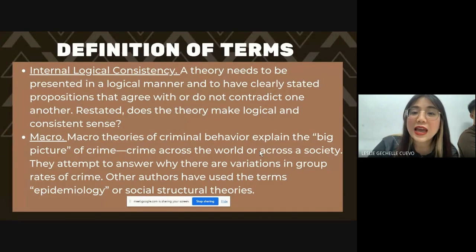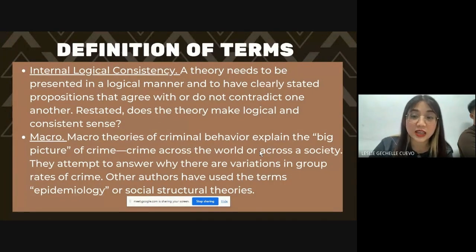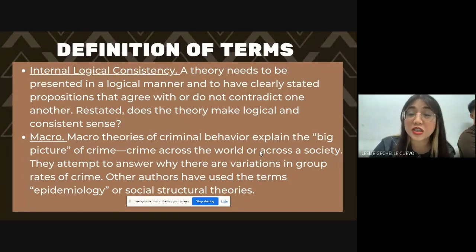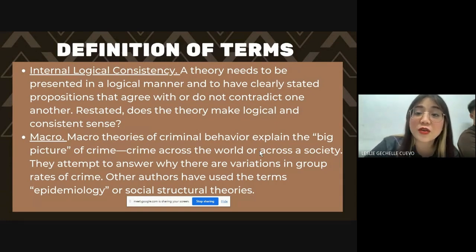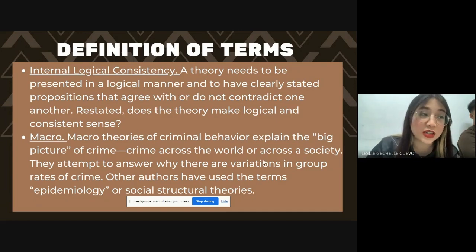And then we have macro theories. Macro theories of criminal behavior explain the big picture of crime — crime across the world or across a society, hindi lang sa isang specific culture o specific society. Macro theories explain universally; yung scope niya ay pang buong mundo. They attempt to answer why there are variations in group rates of crime. Other authors have used the terms epidemiology or social structural theories.